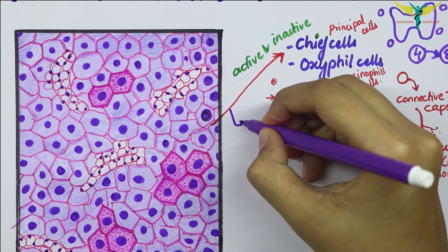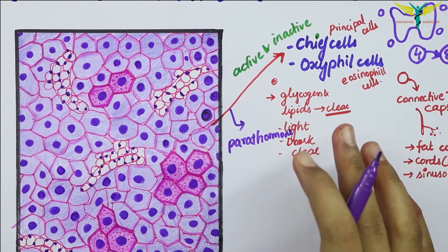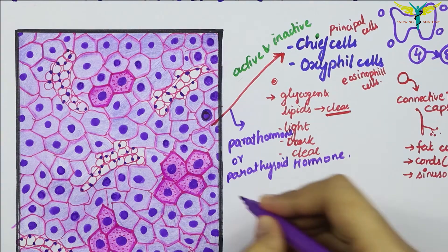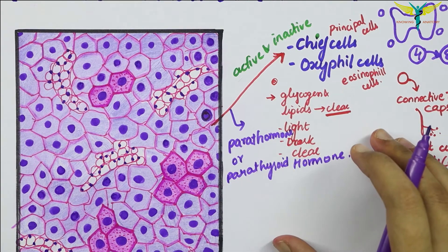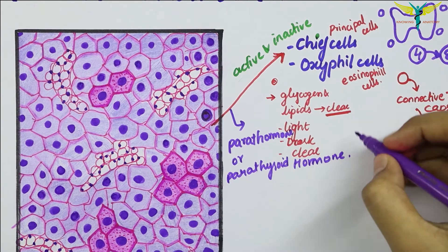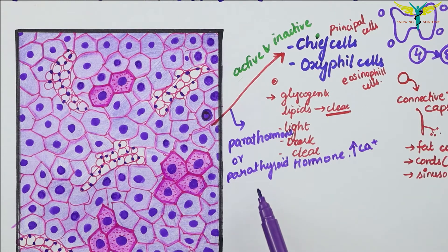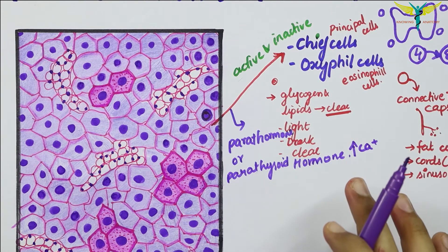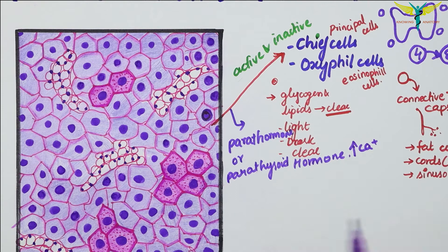The main function of the chief cells is to produce parathyroid hormone, or parathormone. This hormone helps to increase serum calcium levels through osteoclastic activity on bone and by enhancing calcium absorption from the gut.